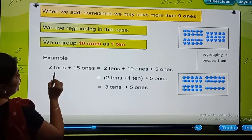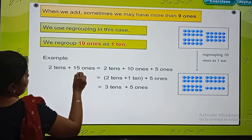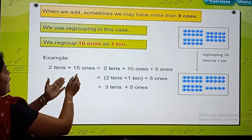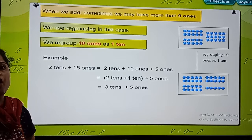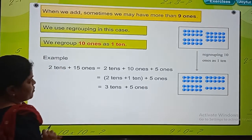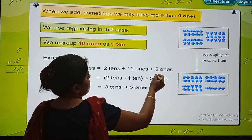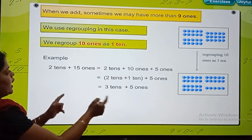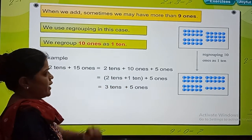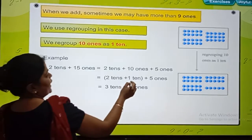For example here: 2 tens and 15 ones. So 2 tens is written as it is. But how will we expand this 15 ones? 15 will be changed into 10 ones plus 5 ones. Now the next step: 10 ones is 1 ten.